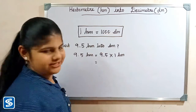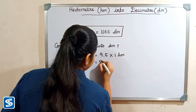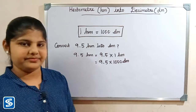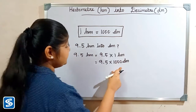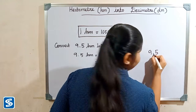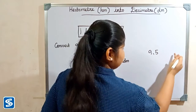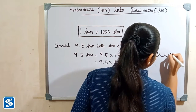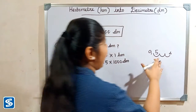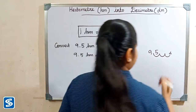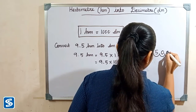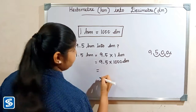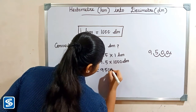The easy way to multiply by 1000 is to move the decimal point three places to the right. Now we have to fill zeros in the extra spaces. So 9.5 multiplied by 1000 decimeter will be 9,500 decimeter.